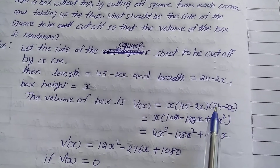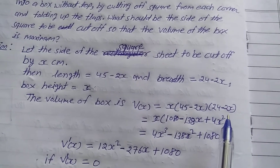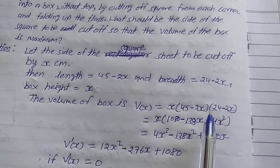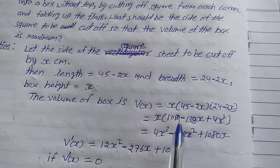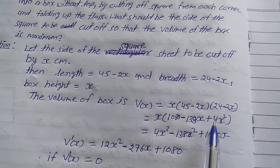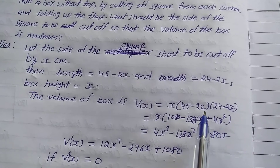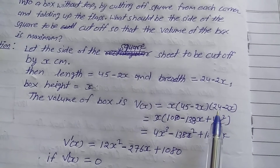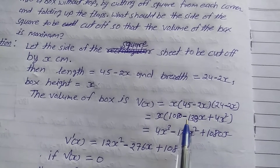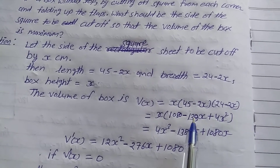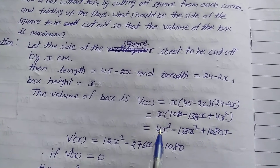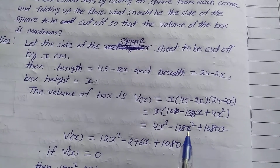The volume of the box V(x) is equal to x multiplied by (45 minus 2x) multiplied by (24 minus 2x). Expanding: 45 multiplied by 24 is 1080, minus 2x multiplied by minus 2x is plus 4x squared, and minus 2x multiplied by 24 plus minus 2x multiplied by 45 gives minus 138x. So V(x) equals 4x cubed minus 138x squared plus 1080x.